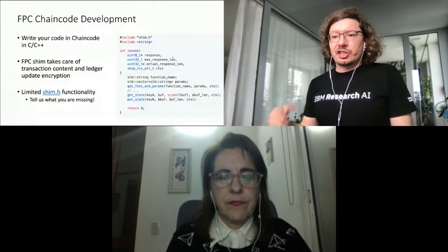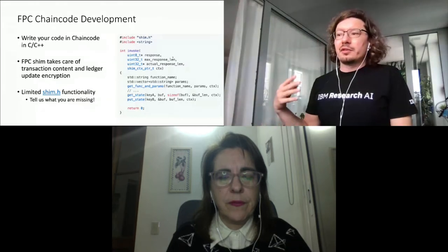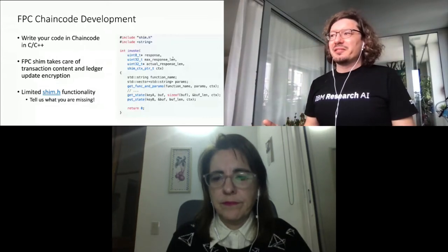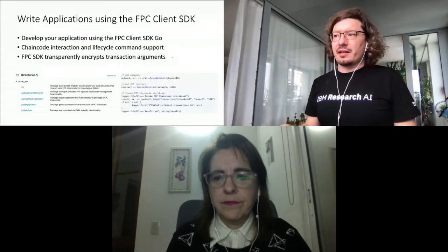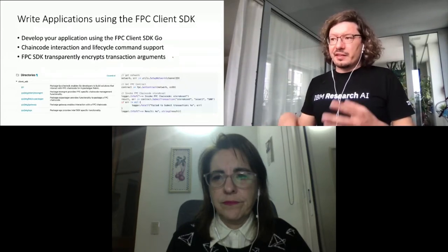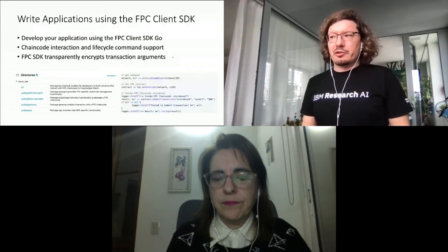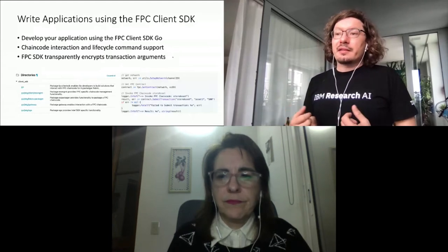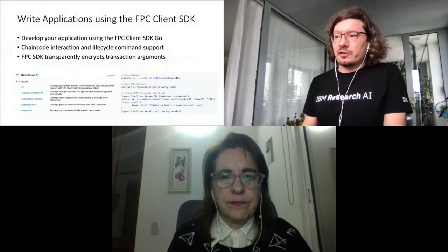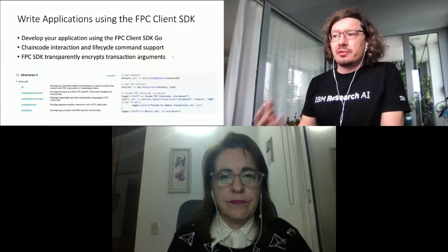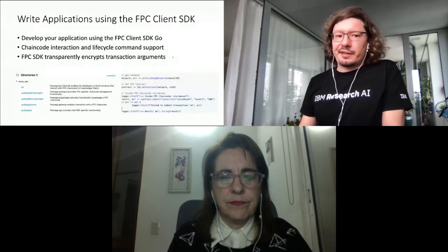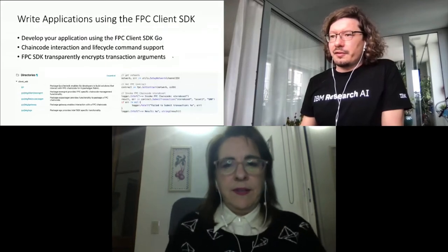Developing the chaincode itself is just one side. As we saw in the architecture slide, we also have to look at the client application. To make this as smooth as possible, we provide the FPC Client SDK for Go, which is built on top of the normal Fabric SDK for Go and extends it with transparent encryption for transaction arguments. That allows us to protect the chaincode interaction, and we also provide you with the lifecycle commands to package, install, approve, and commit an FPC chaincode.